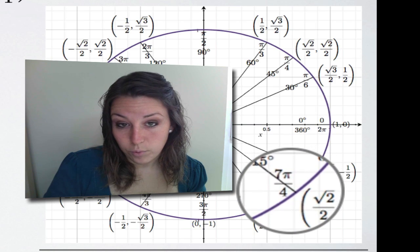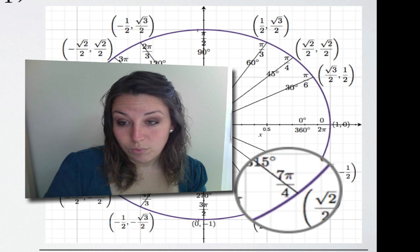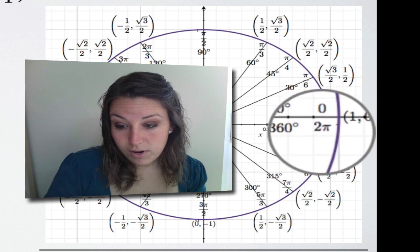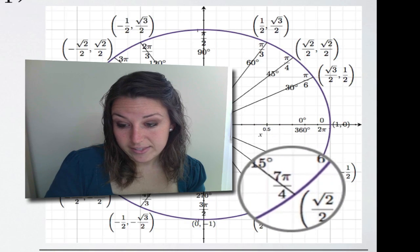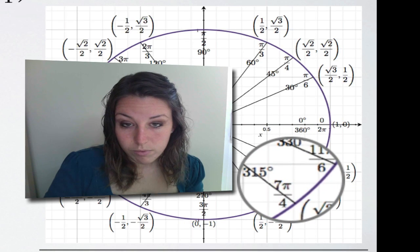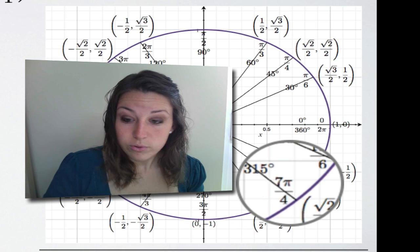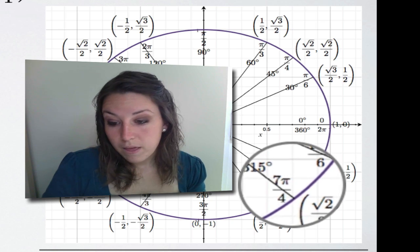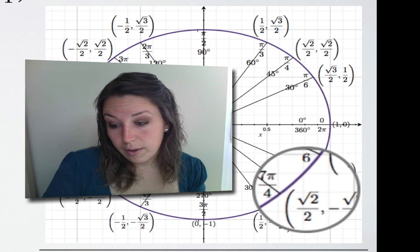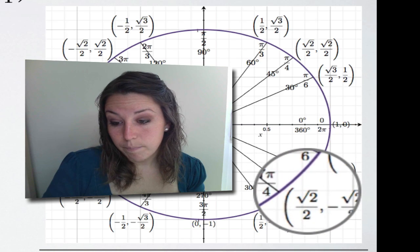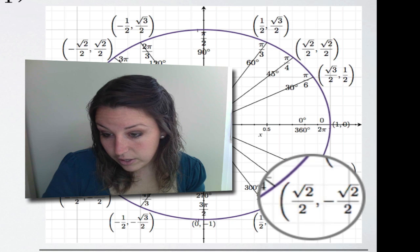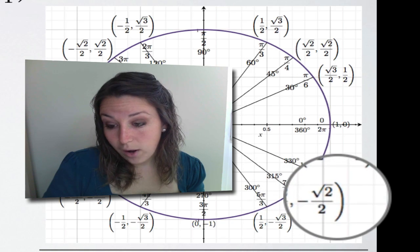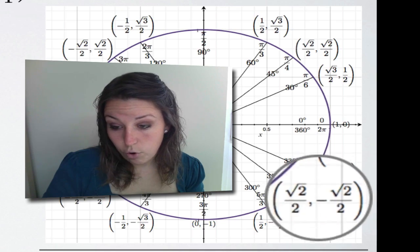Notice that if you added seven pi over four and pi over four, you'd get eight pi over four, which equals two pi, landing you right back at zero. So negative pi over four is the same as seven pi over four. Looking at the unit circle, cosine of this angle corresponds to the x-coordinate: positive square root of two over two. Sine of the angle corresponds to the y-coordinate: negative square root of two over two.